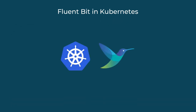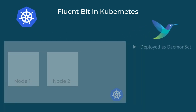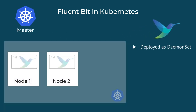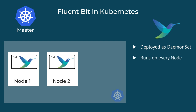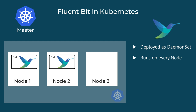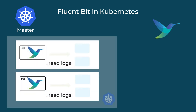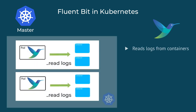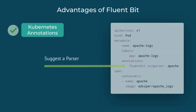How does FluentBit actually run in a Kubernetes cluster? FluentBit gets deployed as a DaemonSet, which means it will run on every Kubernetes node. So when a new node gets added to the cluster, a FluentBit pod will start there immediately. On each node, FluentBit will gather logs from all the containers on that node. In addition, it will gather metadata for those logs — like pod IP, container IP, and namespace — from the Kubernetes API. A cool feature is that you can suggest which parsers to be used on pods using annotations in Kubernetes configuration files.